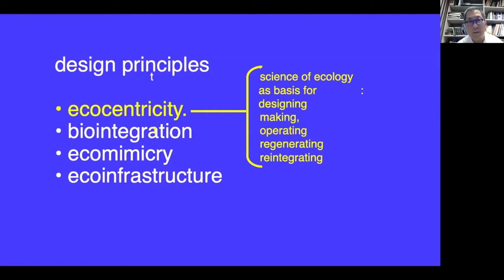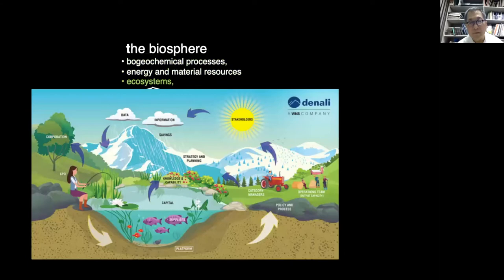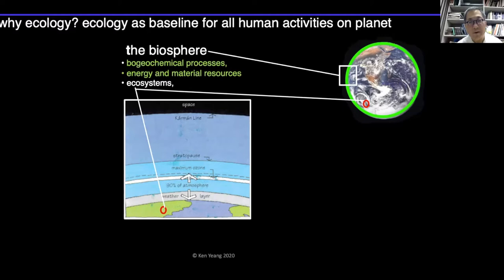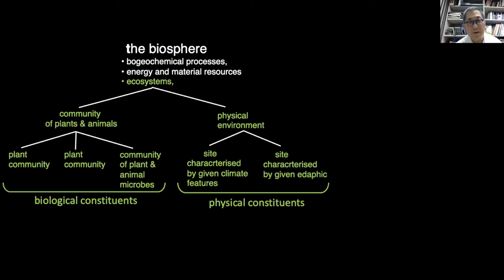Ecocentricity is the science of ecology as the basis for designing, making, operating, regenerating, and reintegrating our built environment. Everything starts with the biosphere — this thin film which surrounds the planet where all organisms live. Within the biosphere are biogeochemical cycles, energy, material resources, and ecosystems. The biosphere consists of organic and inorganic constituents: communities of plants and animals, which are the biotic constituents, and the physical environment, which are the abiotic constituents.